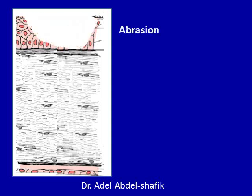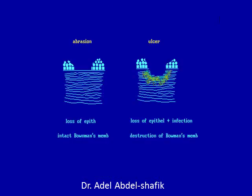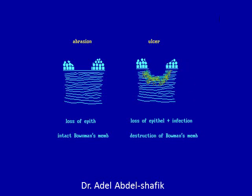Abrasion means there is loss of the epithelium but the Bowman's membrane is intact. When the Bowman's membrane is intact there is no opacity. In case of an ulcer there is destruction of the Bowman's membrane and this will leave an opacity behind. So abrasion is simply loss of epithelium, while an ulcer is loss of epithelium plus infection followed by an opacity.